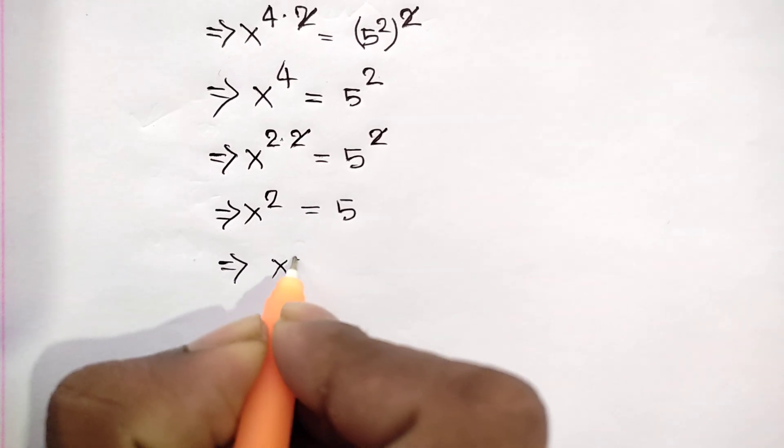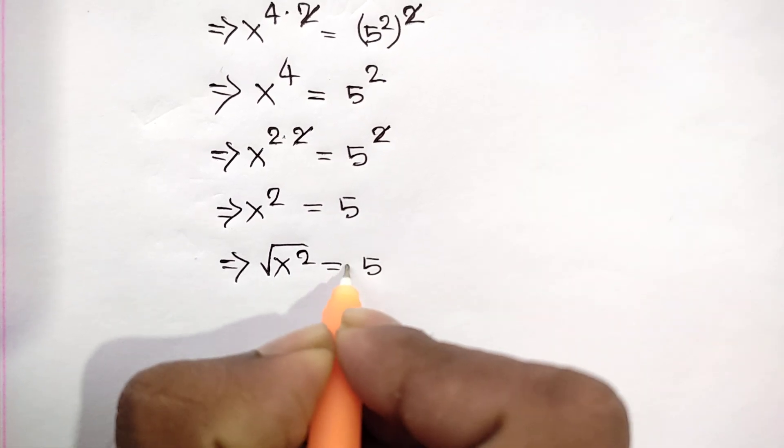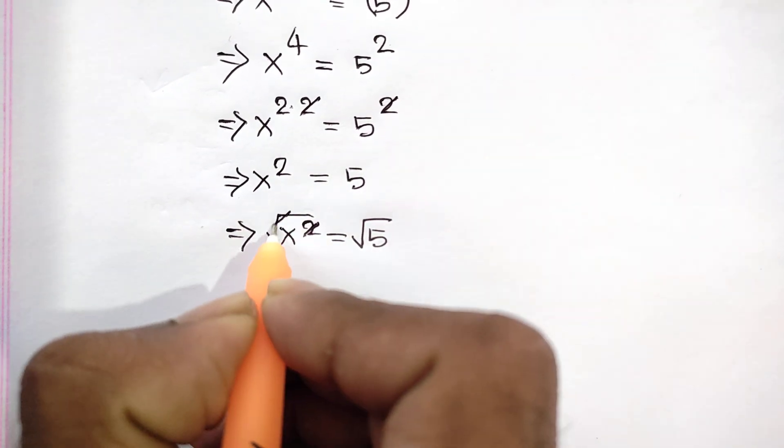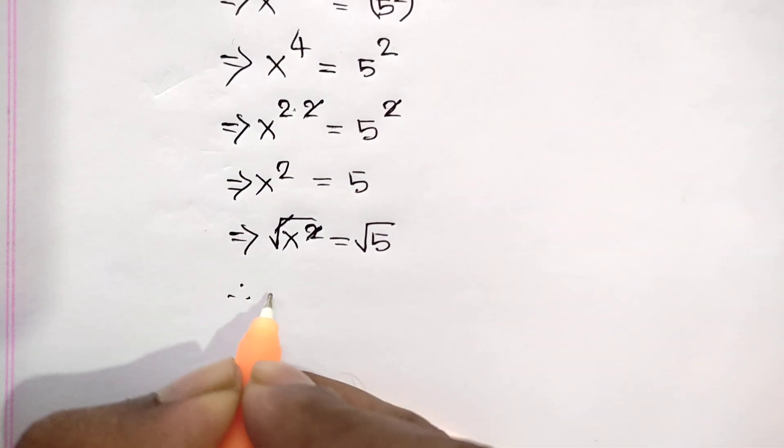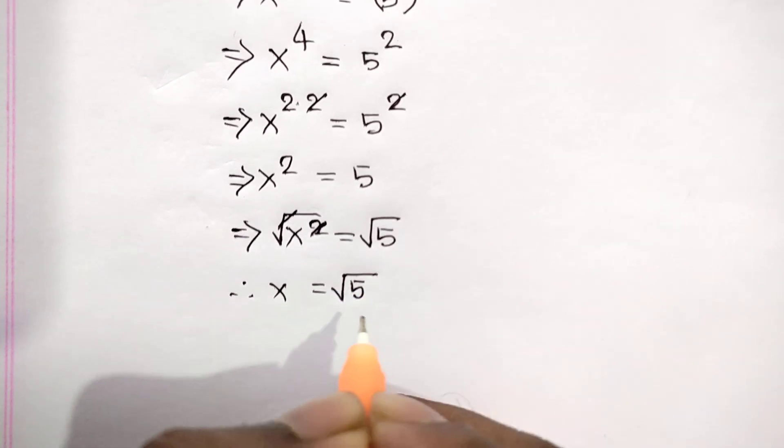Then we apply square root, so we can write x square root 5 square root. This square cancels square root, so x value is root 5. This is the answer.